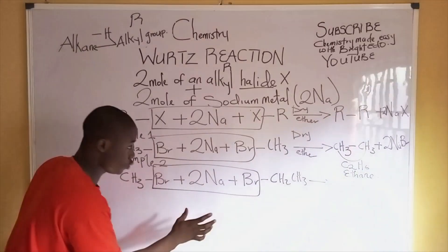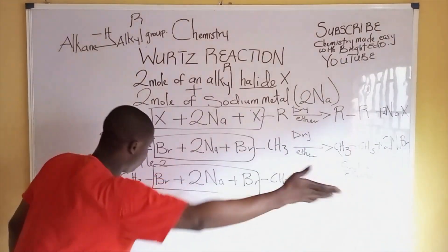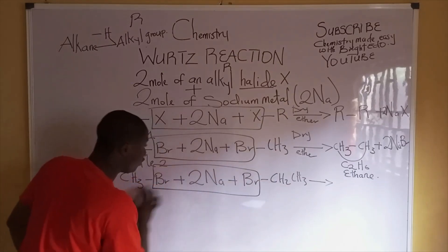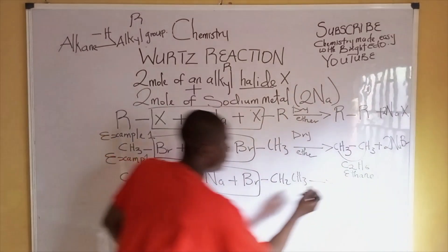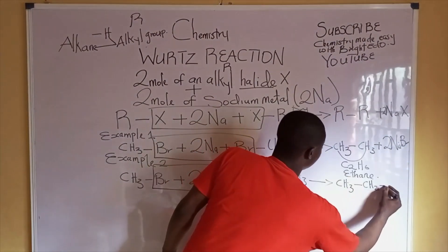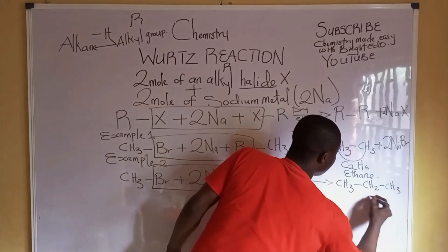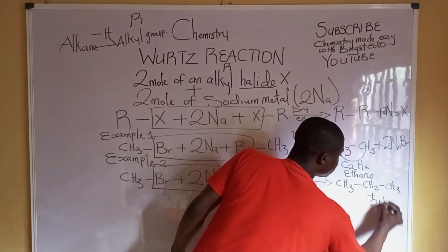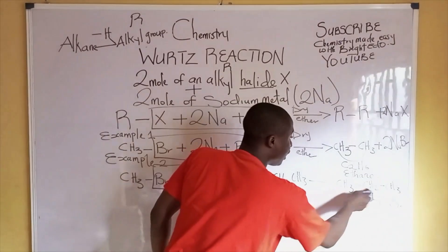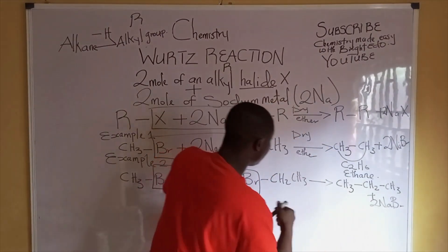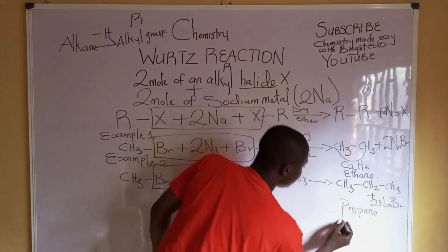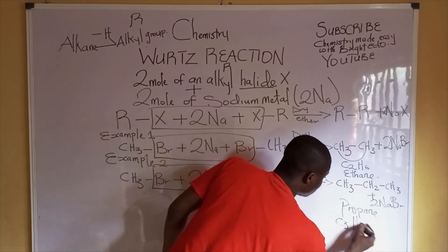The two atoms of bromine combine with the two atoms of sodium to form sodium bromide, and the two alkyl groups combine together. We get CH3-CH2-CH3, plus two moles of sodium bromide. This is a three-carbon alkane, which is called propane — C3H8.